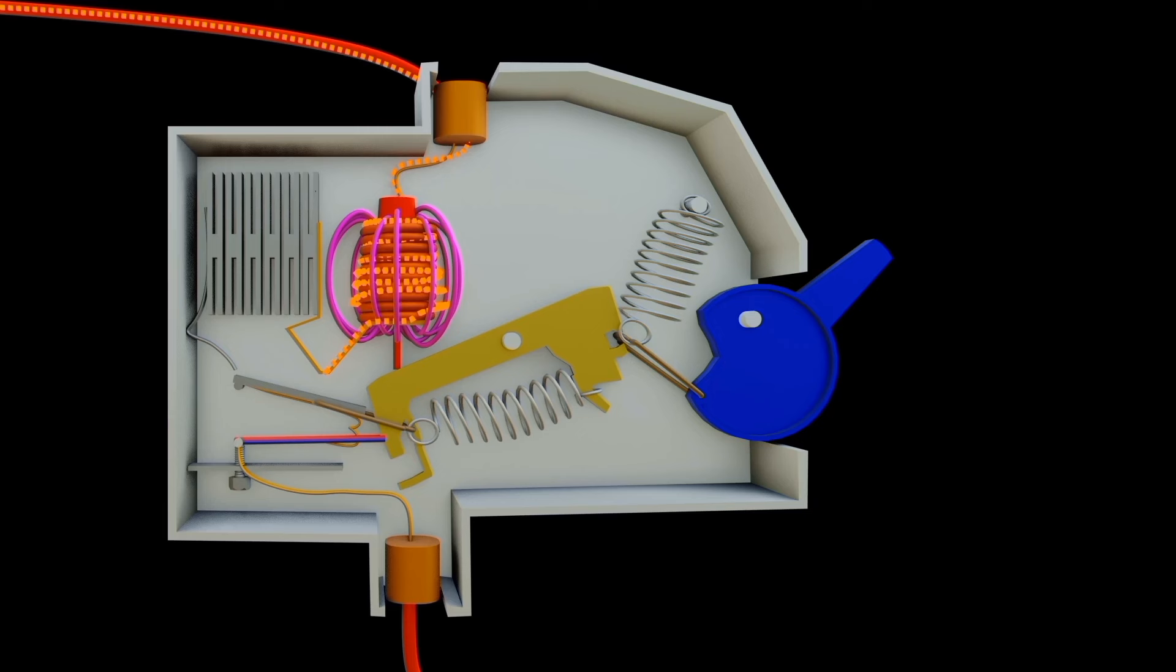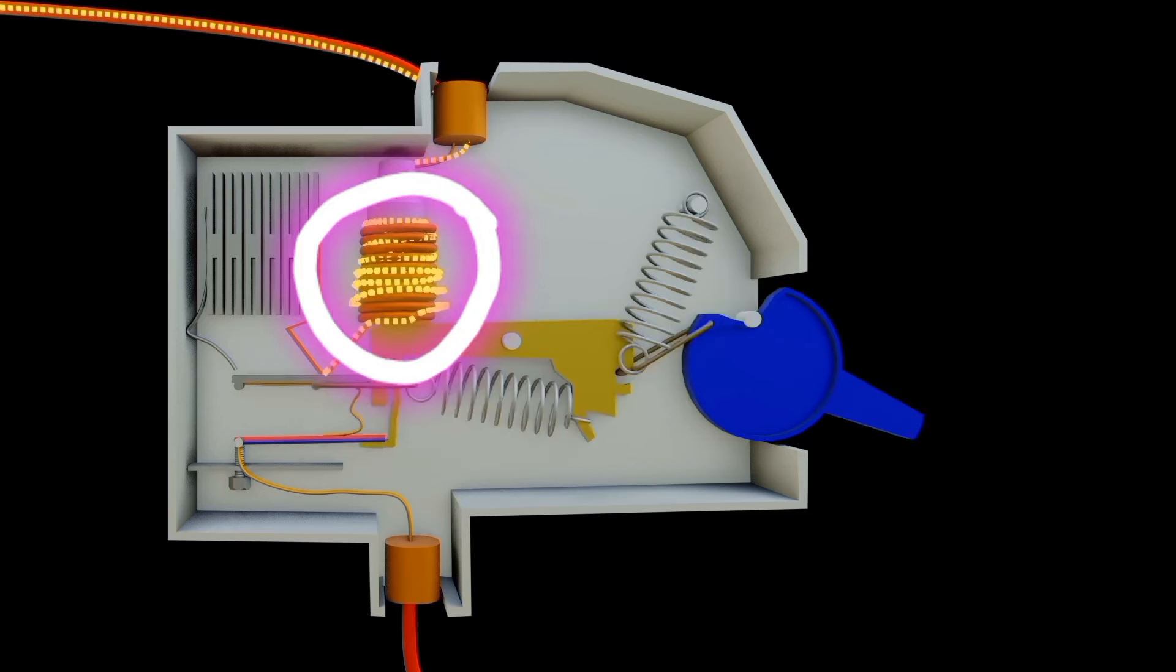But with a circuit breaker installed do not worry. Circuit breaker contains magnetic coil. This coil helps when short circuit occurs.